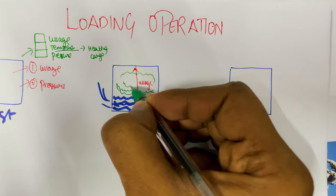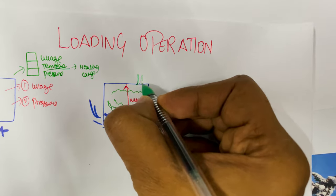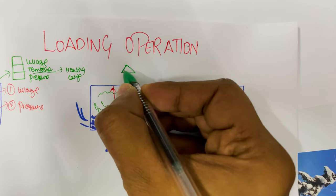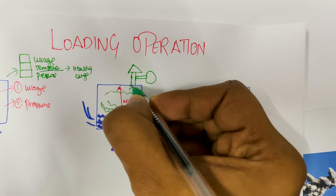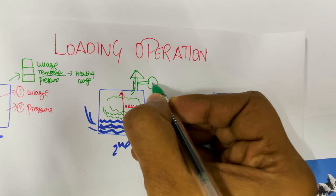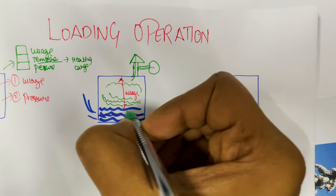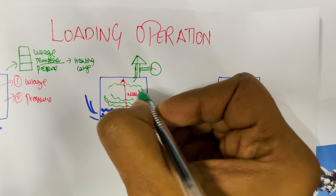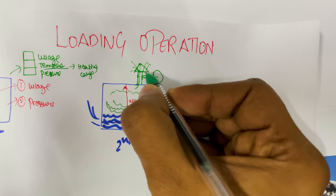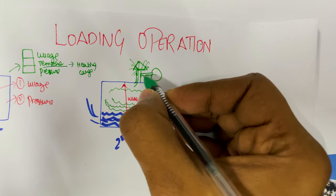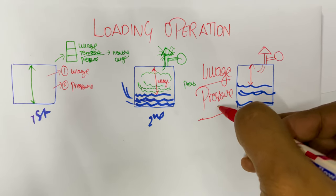On each cargo tank we have a PV system — pressure and vacuum system. This is a single system where, in case of pressure, the air will go out, and in case of vacuum, the air will come in. So once the cargo starts coming inside the cargo tank, the air inside will start coming out through this PV system. That is why we also monitor pressure. Ullage and pressure are two important factors.